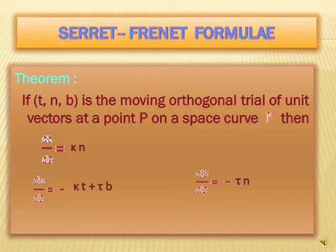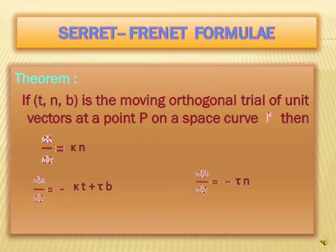We have a theorem related to the Serret-Frenet formula. The theorem states: if t, n, and b is the moving orthogonal triad of unit vectors at a point p on a space curve gamma, then dt/ds = κn, dn/ds = −κt + τb, and db/ds = −τn. These three formulas will be derived in the proof.